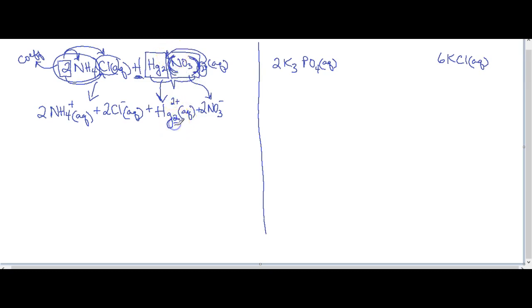So basic rule, subscripts don't become coefficients unless it's outside of parentheses. So that's why this 2 on the Hg, it stays as a subscript. But the 2 on the full NO3, it comes out and becomes the coefficient because it's outside of the parentheses. And that becomes aqueous.